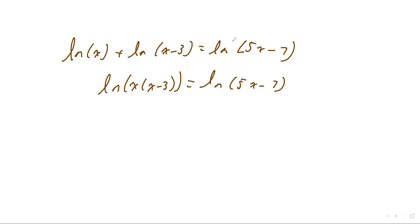And then using what we saw on yesterday's one example I was able to do, since I have just one single log on both sides, those basically go away, and I can set what's inside equal to each other. So I'm going to go ahead and distribute that to get x squared minus 3x equals 5x minus 7. And then I see that it's a quadratic, so I need to set this equal to 0. So I'm going to subtract 5x and add 7.